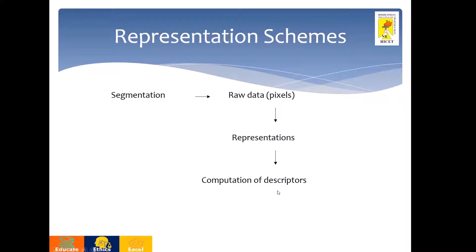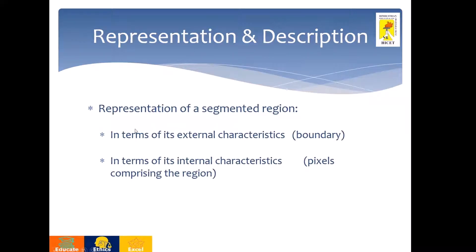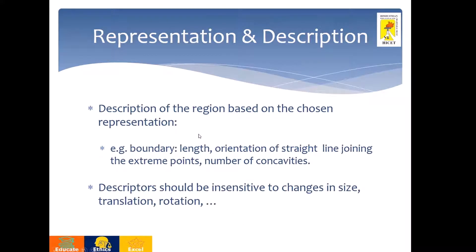Now we will see about representation and description. Representation can be performed based on the external characteristic of the image or the internal characteristic of the image. External characteristic means boundary representation, and internal characteristic means region representation. Description is based on the chosen representation. If you choose the boundary alone, you can find the length of the boundary or the number of concavities in it. Likewise, you can describe the boundary or the region, which helps to identify the object based on its label.